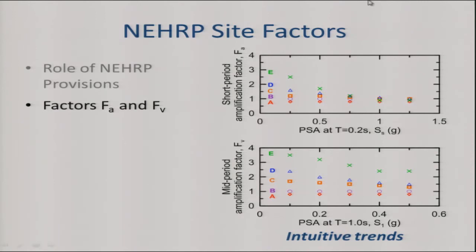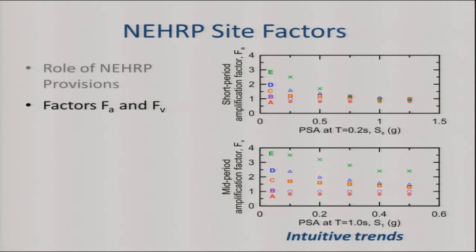Looking at the factors: there are five categories, E being softest and A being hardest. At the far left — fairly weak input — you see soft soil has higher amplification than stiffer soil and rock. Another trend is that amplification decreases as shaking gets stronger — that is nonlinearity in site amplification. The level of nonlinearity is a lot steeper for site class E than for D or C. There is also more nonlinearity at short periods than long periods. All of these are intuitive, reasonable trends, and those basic features are being retained.